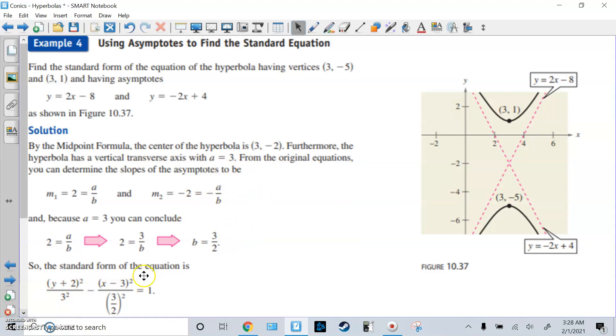Once you have a and b, you can fill in the formula if you know h, k, a, and b. It's vertical, so make sure y squared is first. And a always goes with the first fraction, the positive fraction, so that's why it's 3. We found b is 3 halves. Squared equals 1.